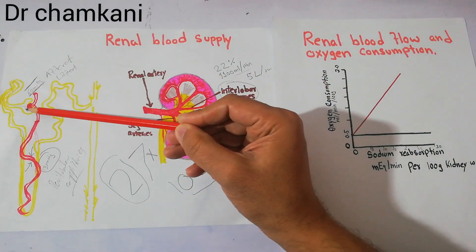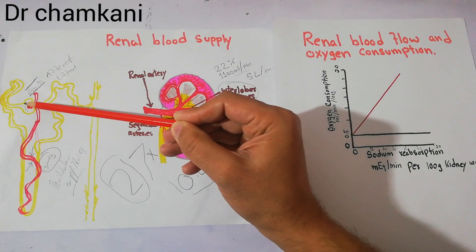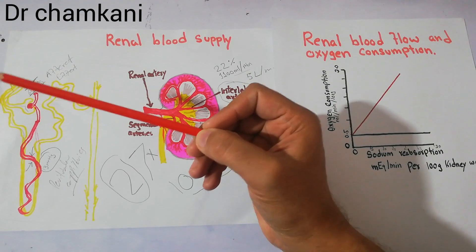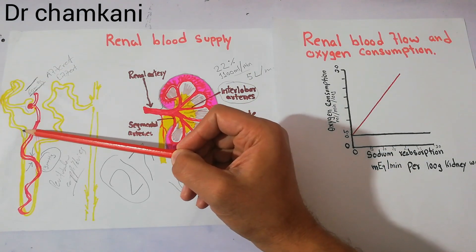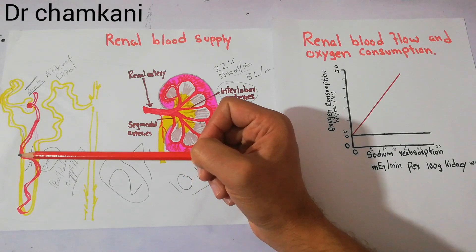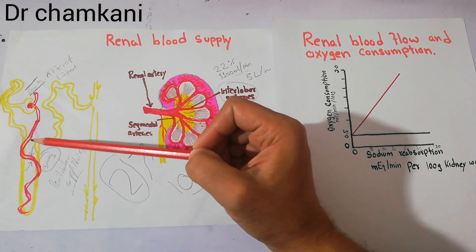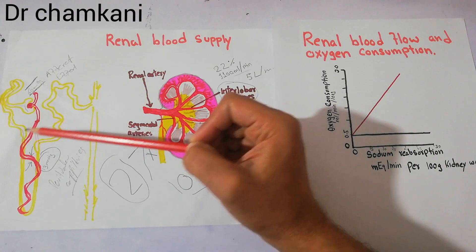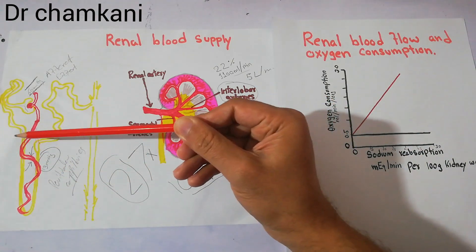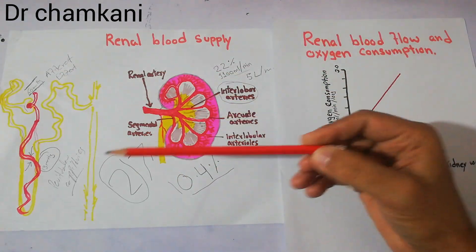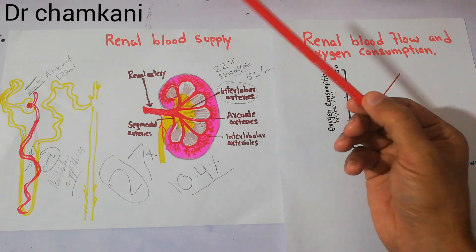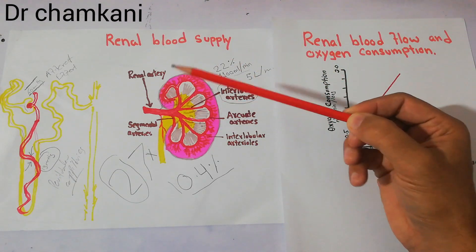The filtration process occurs at the Bowman's capsule in the glomerulus. The filtrate may contain excess sodium, which is very important and needs to be reabsorbed from the tubules into the peritubular capillaries and brought back into the blood. This reabsorption process of sodium requires a lot of oxygen, which is why the oxygen supply to the kidneys is seven times higher than the metabolic needs of the kidney tissues themselves.